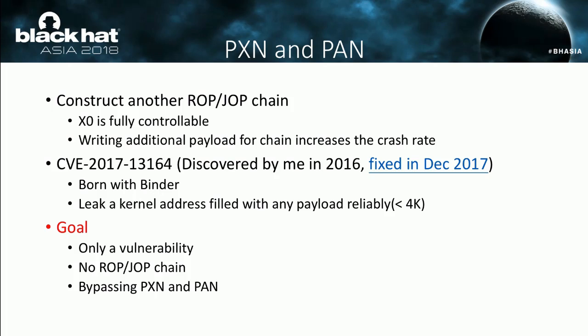It's not difficult to find a gadget where the external register is fully controllable. However, generating additional payload into the kernel for the JOP chain increases the crash rate during exploitation. CVE-2017-13164, discovered by me in 2016, can help solve this problem — it's a binder driver bug that can leak a kernel address filled with any payload data in arbitrary bytes. But my goal is to use only one vulnerability, no ROP or JOP chain required, and fully bypass both PXN and PAN mitigations. To achieve this goal, let me introduce a new exploitation technique: the Kernel Space Mirroring Attack.